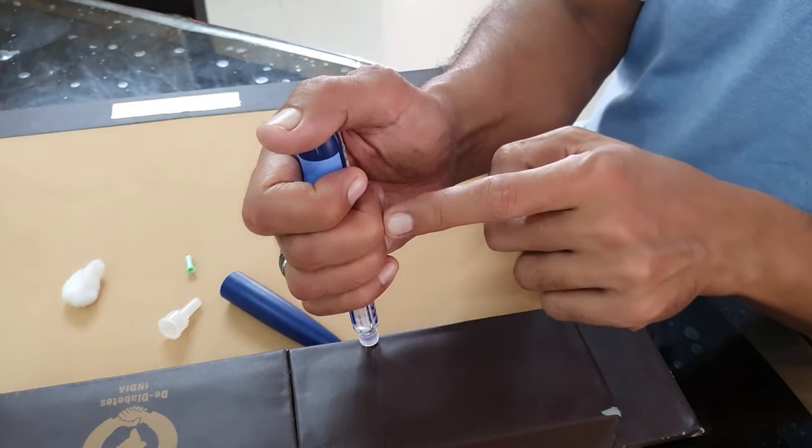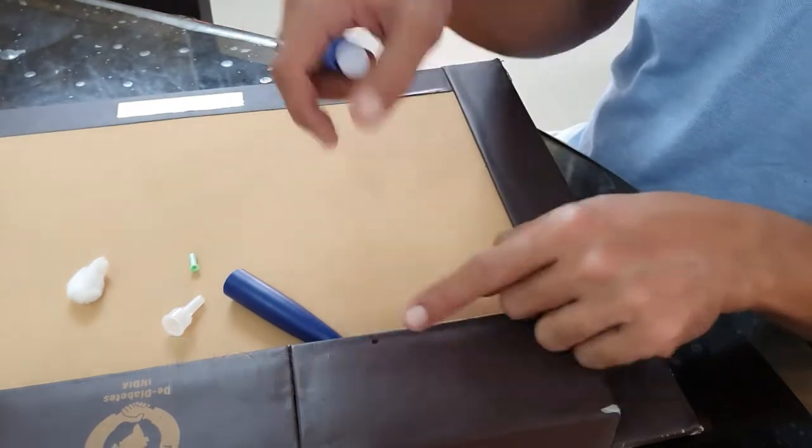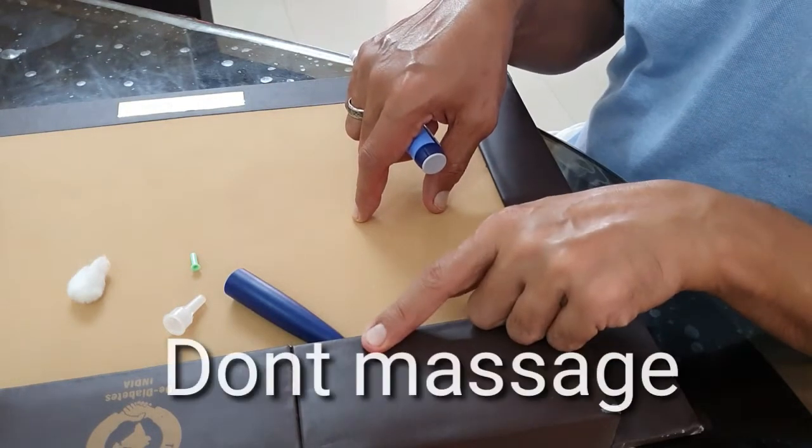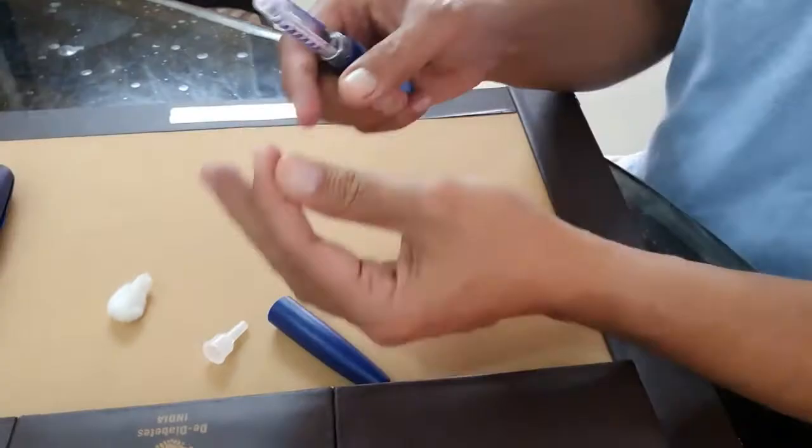Once you inject, you're going to press it and you can see the dial rotating and going back to the original position. After that you take it out. While taking out, you may see some amount of little bleeding but don't worry too much about it.